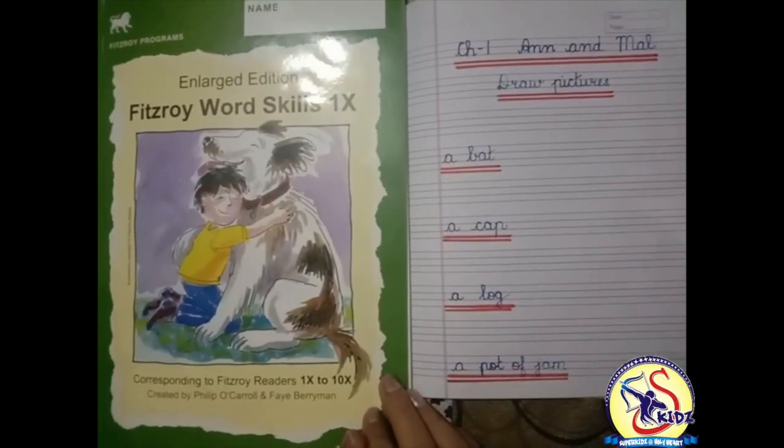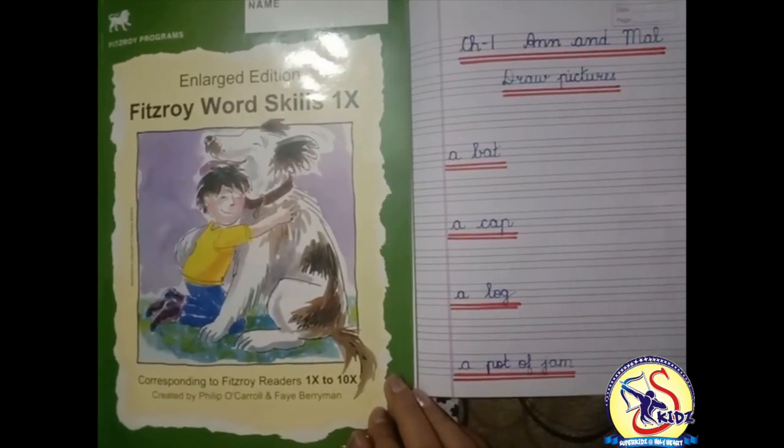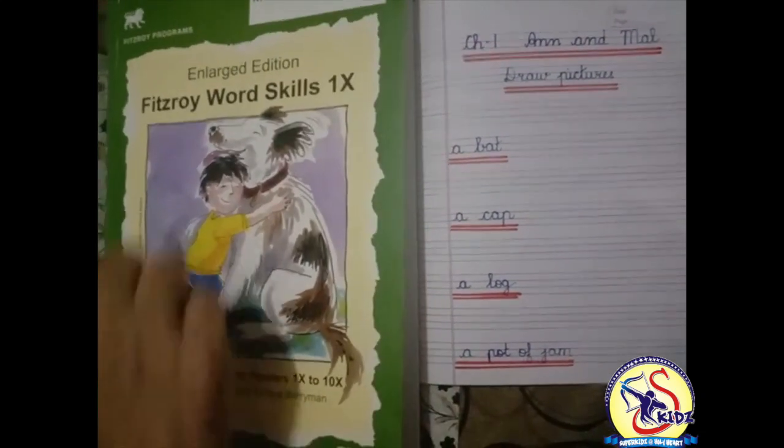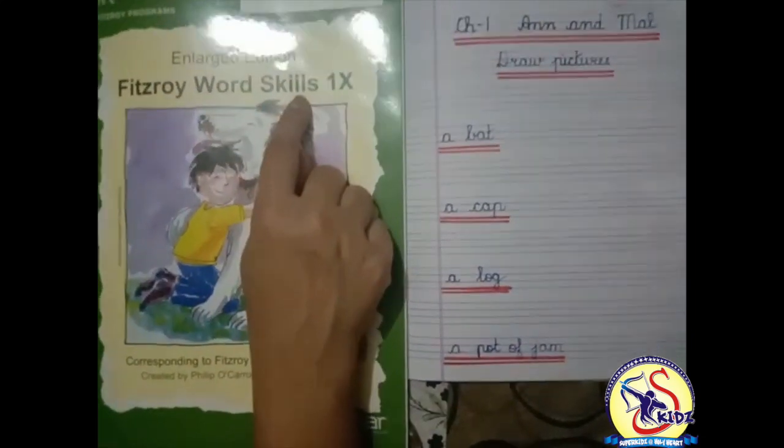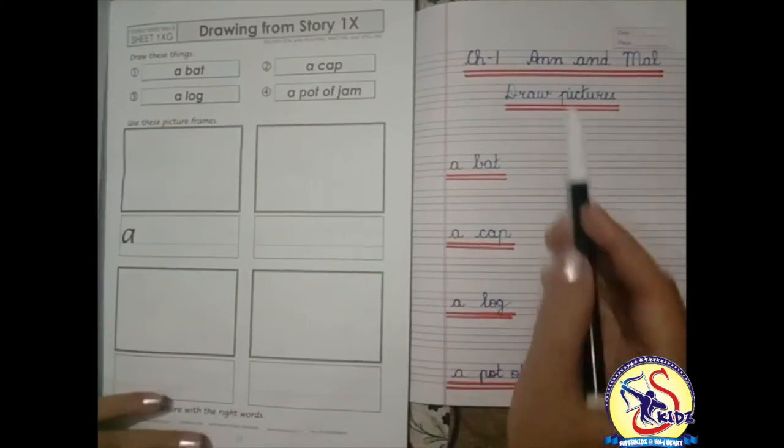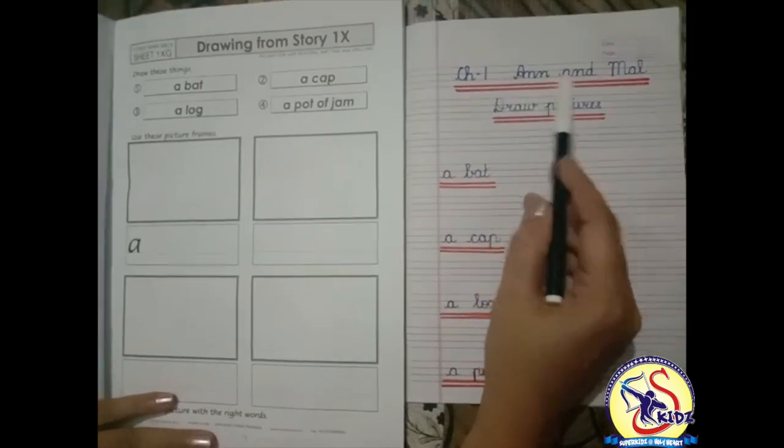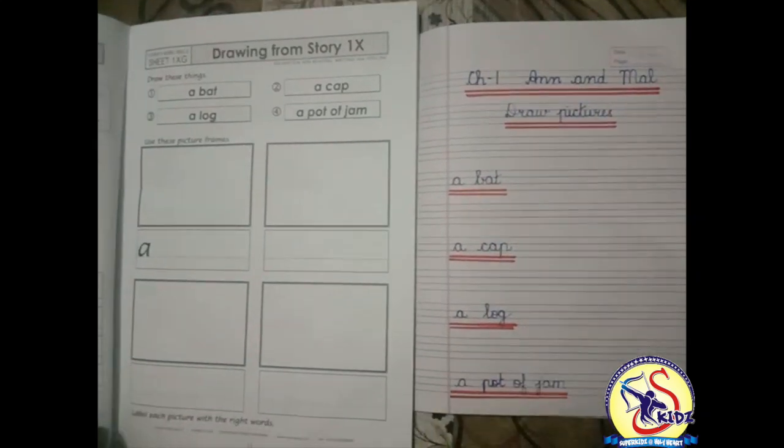Hello everyone, how are you all? Students, today we are going to do one more exercise from the book Fitzroy Word Skills. The name of the exercise is Draw Pictures from Chapter 1, Ann and Mal. So let's start.